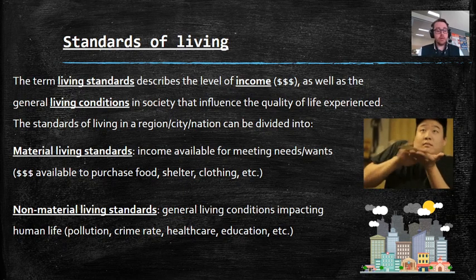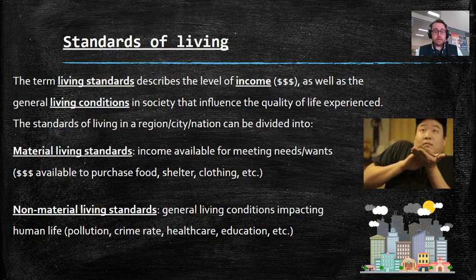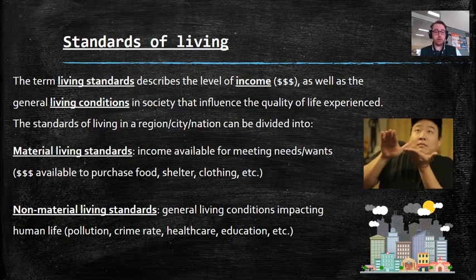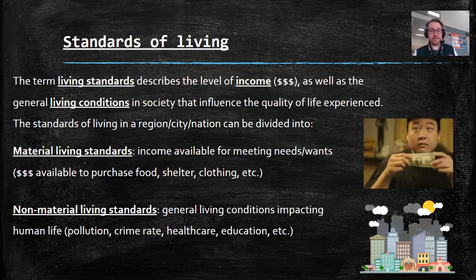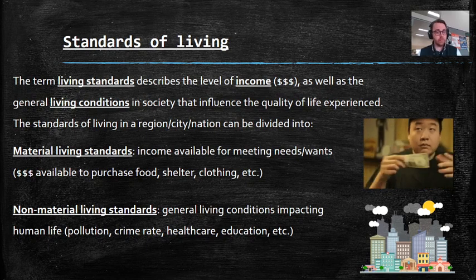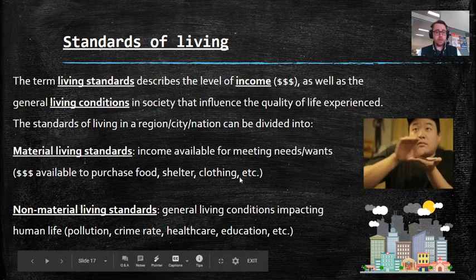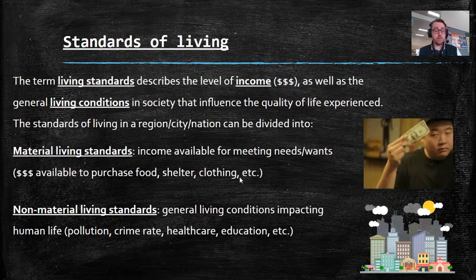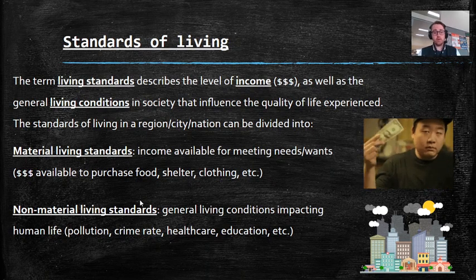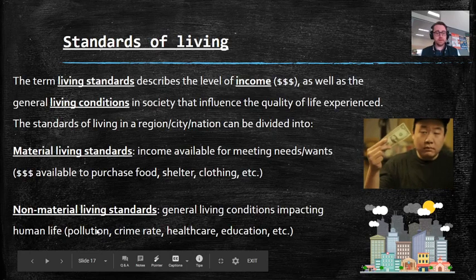The other category is non-material living standards, which relate to your general living conditions impacting human life. You can't really hold the crime rate in your hand, but it's going to impact your quality of life. If you live in a city where there's a lot of crime, or if there's a lot of pollution, or there's no access to education or healthcare, that's going to impact your standards of living. So you've got material — physical things — and non-material, which is the broader picture of your living conditions.